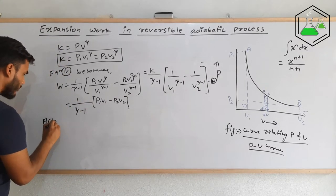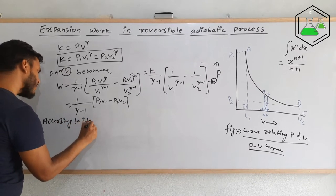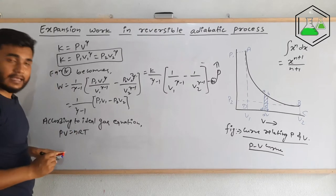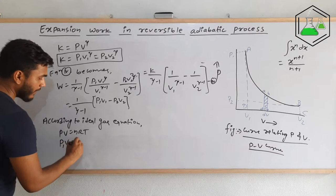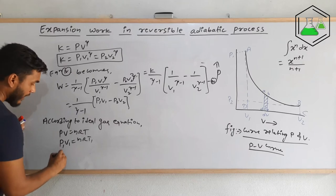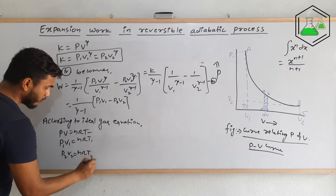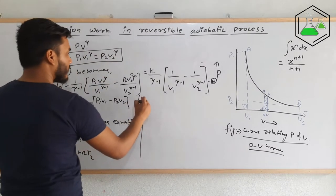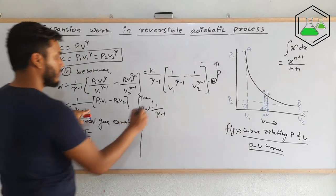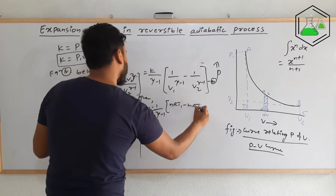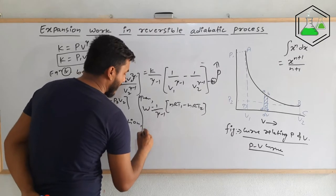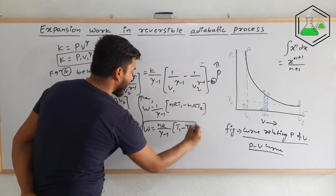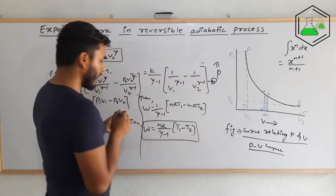According to the ideal gas equation, PV equals nRT. So P1·V1 equals nRT1 and P2·V2 equals nRT2. Substituting these values, W equals (1/(γ-1)) times (nRT1 minus nRT2). Taking nR as common, the final formula is W equals nR divided by (γ-1) times (T1 minus T2). This is the required expression for expansion work in a reversible adiabatic process.